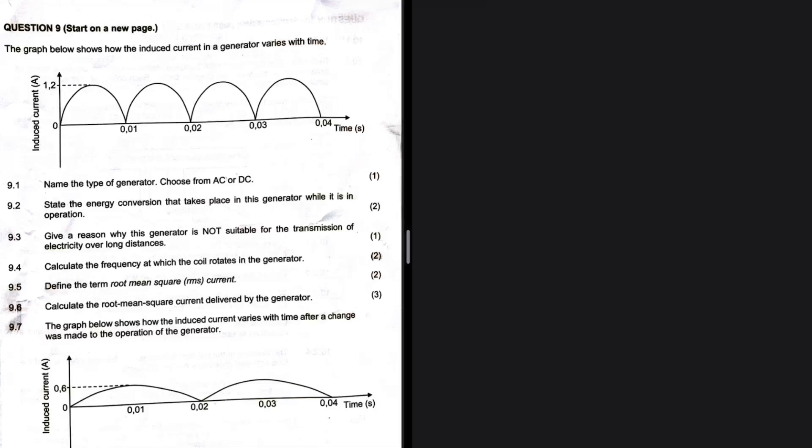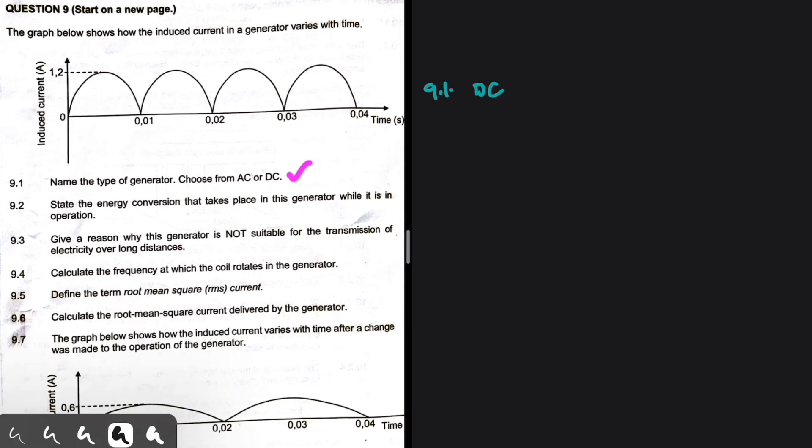Name the type of generator: choose from AC or DC. Should be an easy question to answer. 9.1: This is DC. Why are we seeing that? You can see that the induced current does not change direction, stays in the same direction. If it goes down like this and forms a cosine graph, that would be an AC alternating current. But in our case, we have a DC generator.